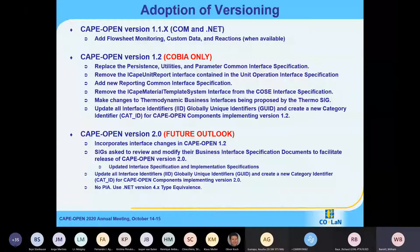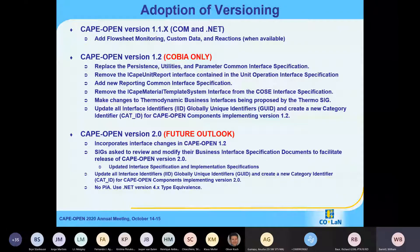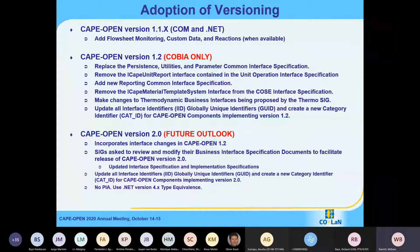Once COBIA is finally released, we'll be moving to version 2.0 of CAPE Open. It'll incorporate the interface changes that are in CAPE Open 1.2. We'd like the other SIGs to review and modify their business interface specification documents so we can have any updated versions incorporated in 2.0. Thermo is doing some work, and unit is doing some work. We'd like to get all that together and roll it into 2.0. We will update the IIDs, GUIDs, and CAT IDs for everything implementing 2.0.